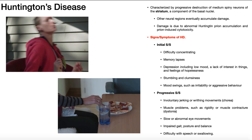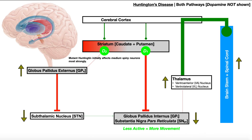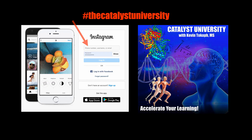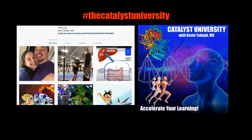To briefly review the signs and symptoms: yes, we have the chorea. We also end up with muscle problems such as rigidity because there's too much muscle contraction, and also muscle contractures. Then we have impaired gait, posture, and balance, which are secondary to the chorea — the erratic movements make these things extremely difficult. And there's also difficulty with speech and swallowing. Hopefully this video gave you a good understanding of how Huntington's disease affects the basal nuclei, where it affects it, and why it leads to the effects that it does. Thanks for tuning in — please like, subscribe, and check out my Instagram for cool science and not-science stuff.